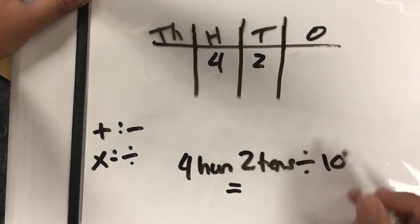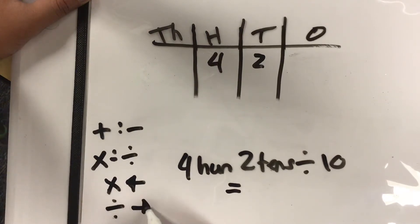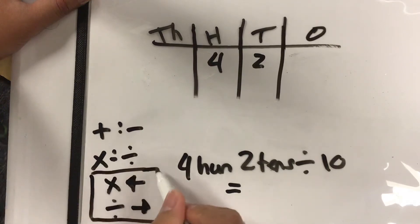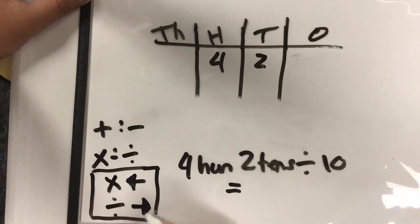Well, multiplication goes to the left. Division, you move to the right. This information is an important part when you're using a unit placement chart.